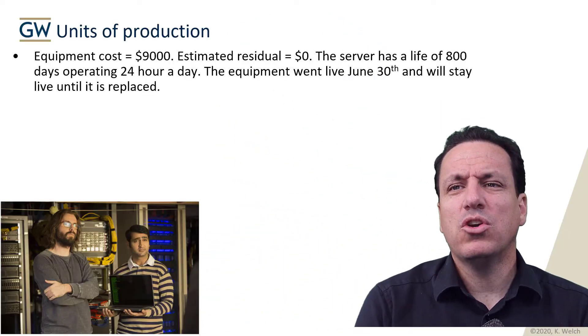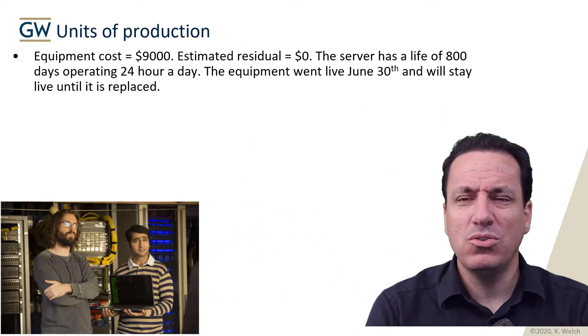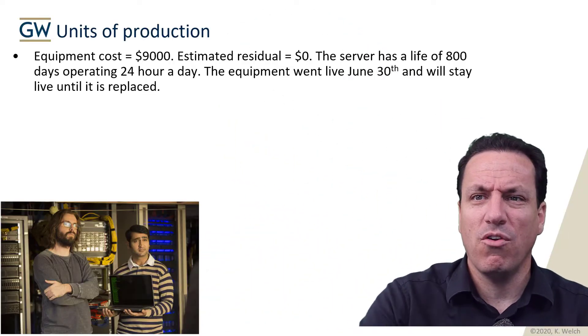If we can actually predict that pretty well, we're going to apply the units of production to the depreciation methodology and just calculate how many units we can produce and then allocate the cost over those units. So let's go through this example using Guilfoyle server.